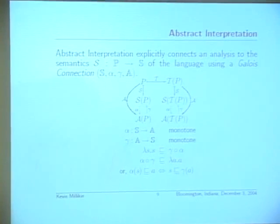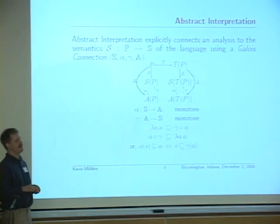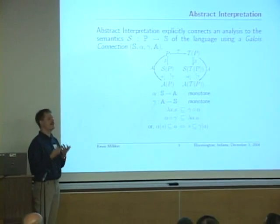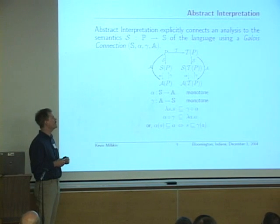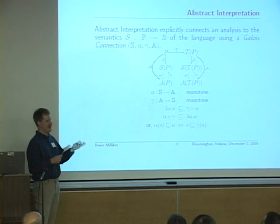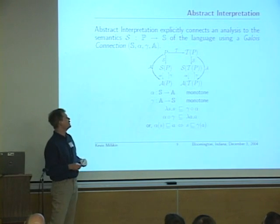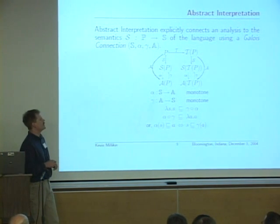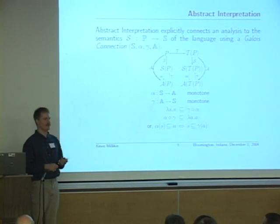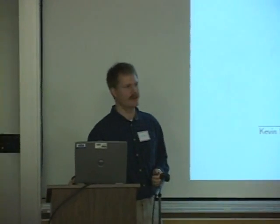If you abstract a value in the concrete semantic domain and then concretize it back, you get something greater than or equal to what you started with — worse or the same. If you concretize an abstract value and then abstract it back, you get something less than or equal to what you started with. For category theory fans, a Galois connection is just an adjunction between categories that are partial orders. Abstract interpretation uses alpha and gamma to connect analysis results to semantics — often deriving the analysis implementation from the semantics and alpha. Gamma tells us how to interpret the analysis results.